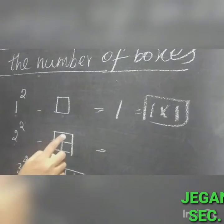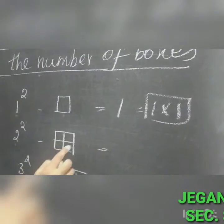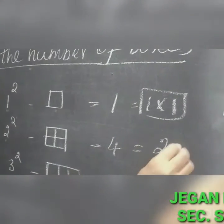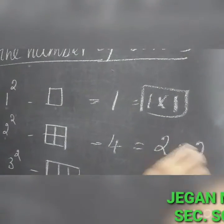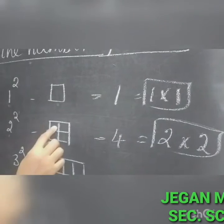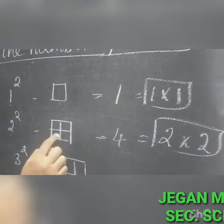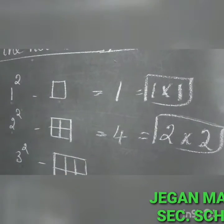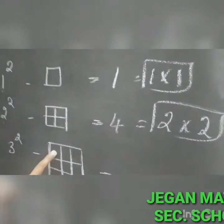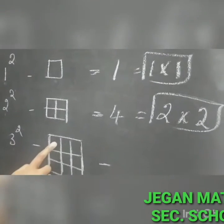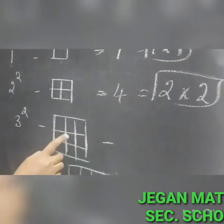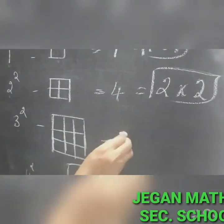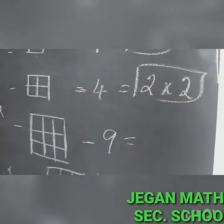Count the boxes: 1, 2, 3, 4 — the answer is 4. That is 2 into 2. Next one: 3 square — count the boxes: 1, 2, 3, 4, 5, 6, 7, 8, 9 — the answer is 9.